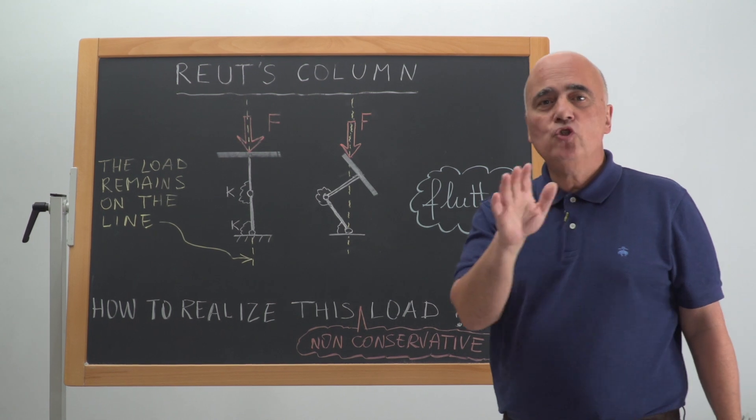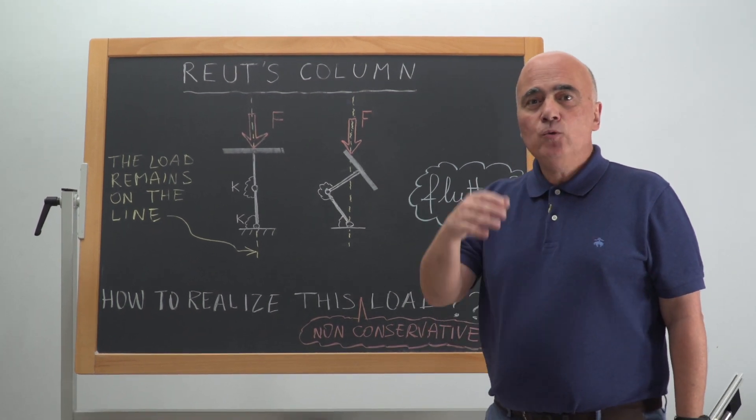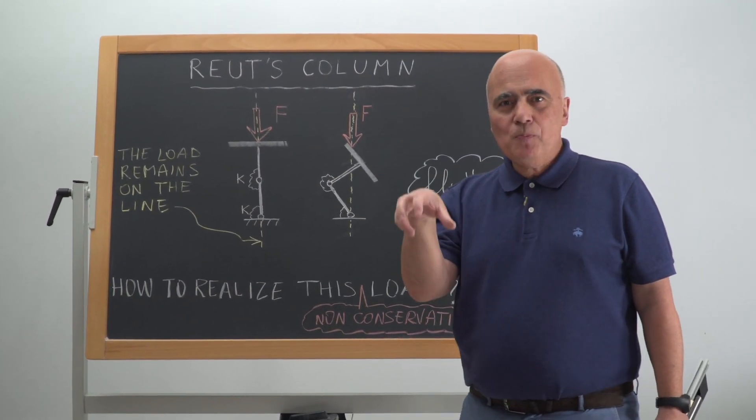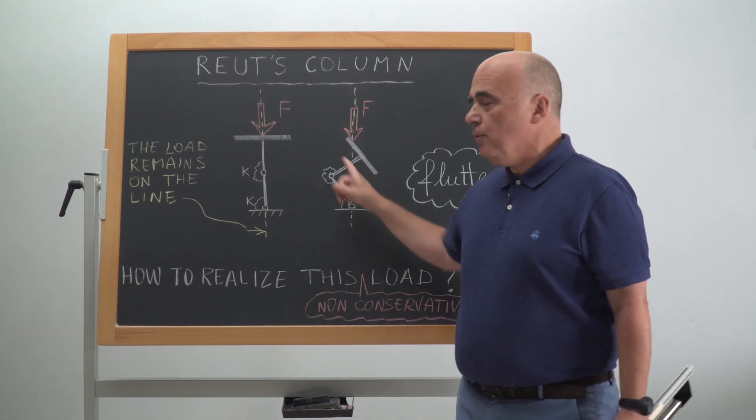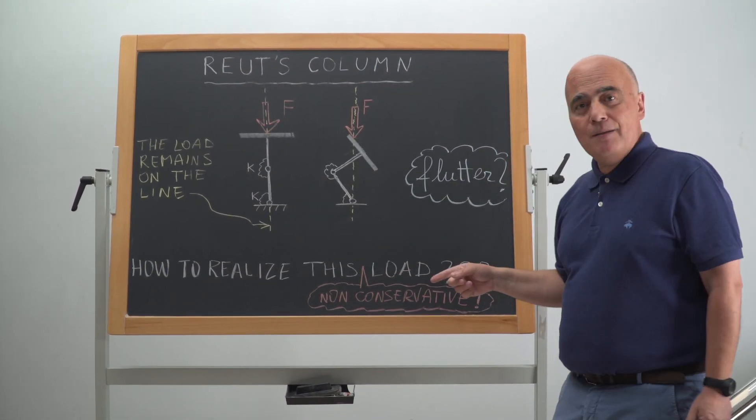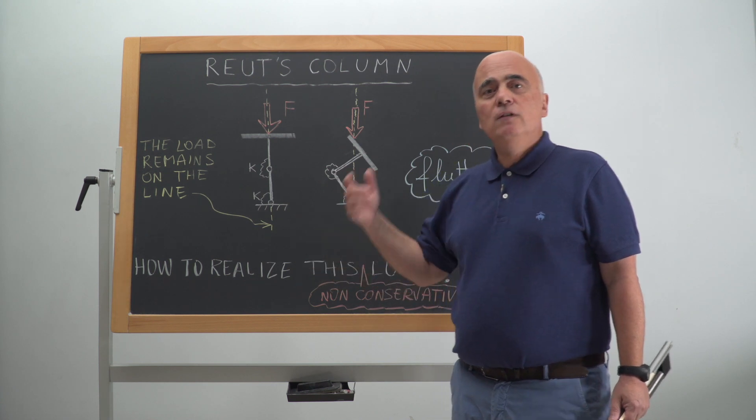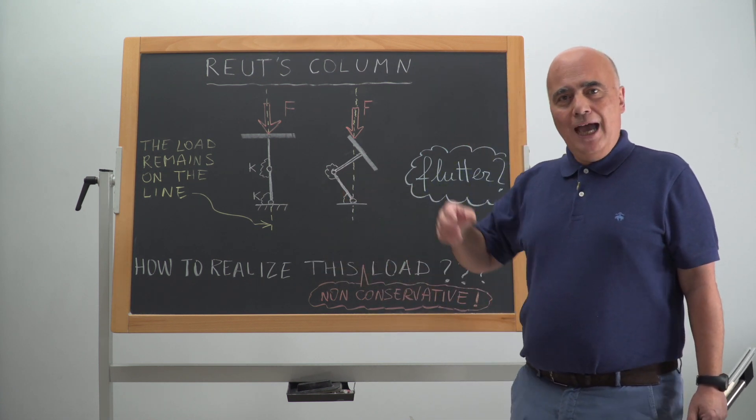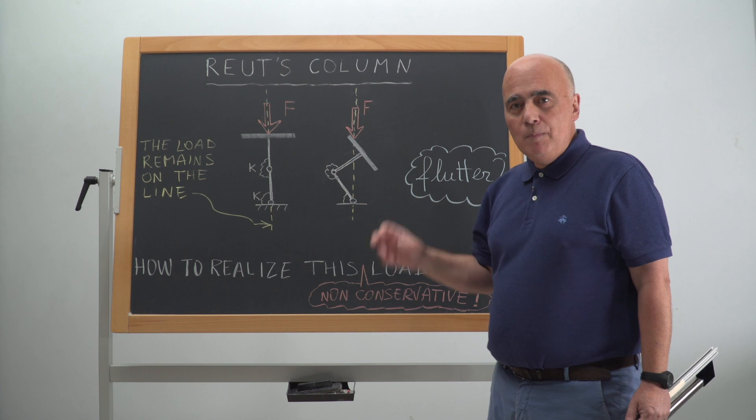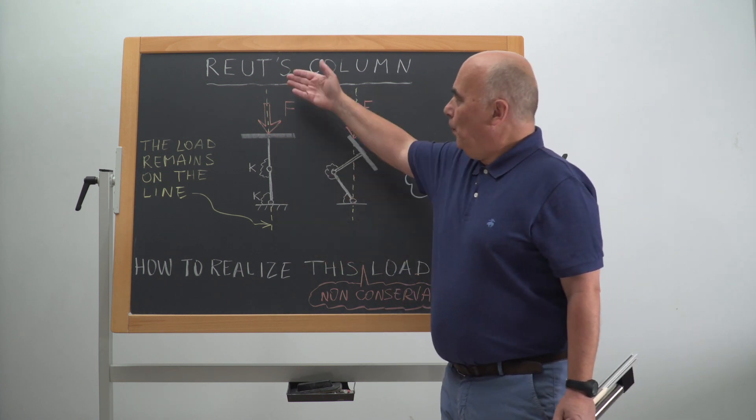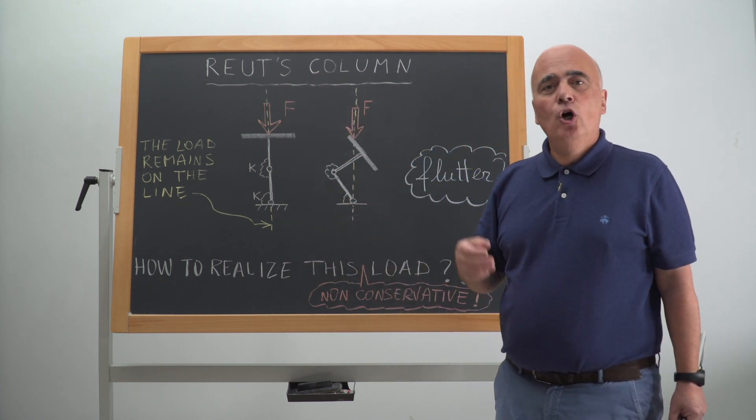We have to move in the lab to see a serious experiment. And we will see that the serious experiment will show for this simple structure flutter instability and, for higher load, divergence instability. And these instabilities will be induced by the correct application of the Reut load.